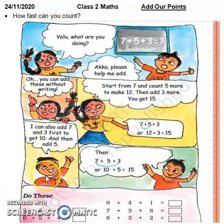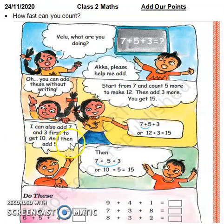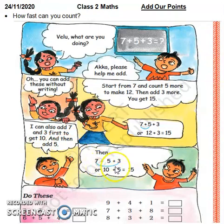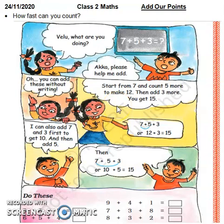Then this child says: I can also add 7 and 3 first to get 10, and then add 5. So how much does 7 plus 3 give? 10. Then 10 plus 5 is 15.